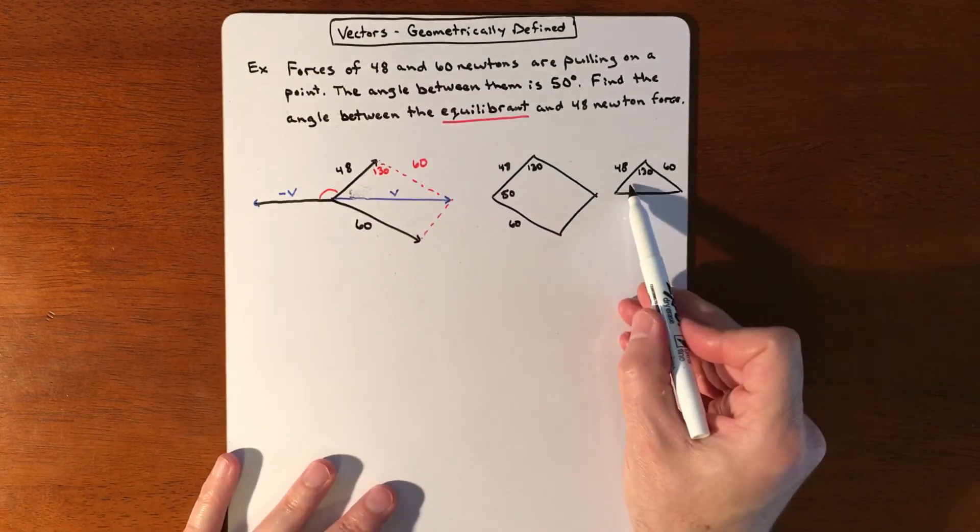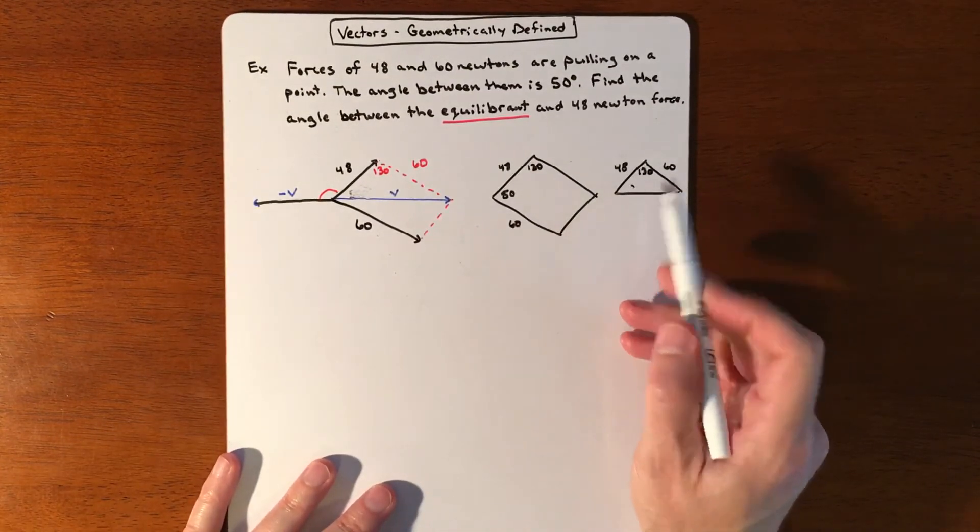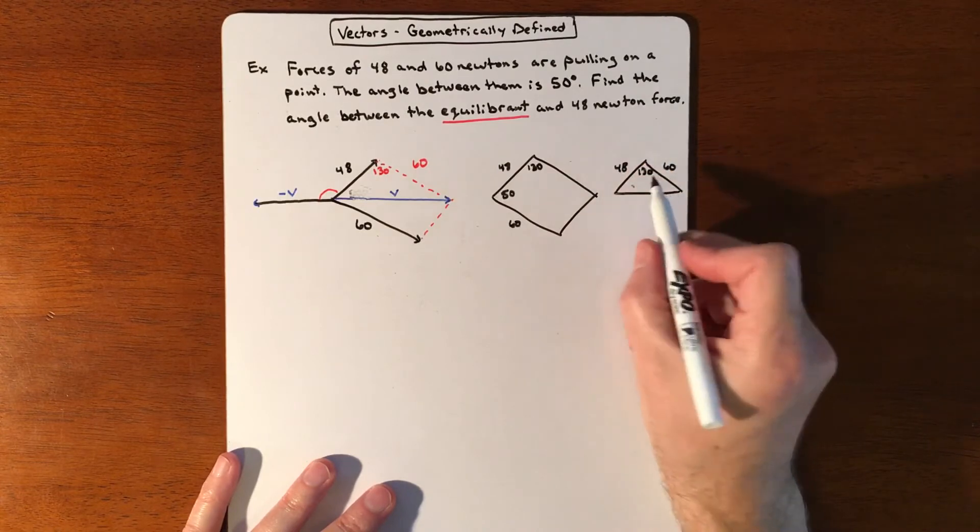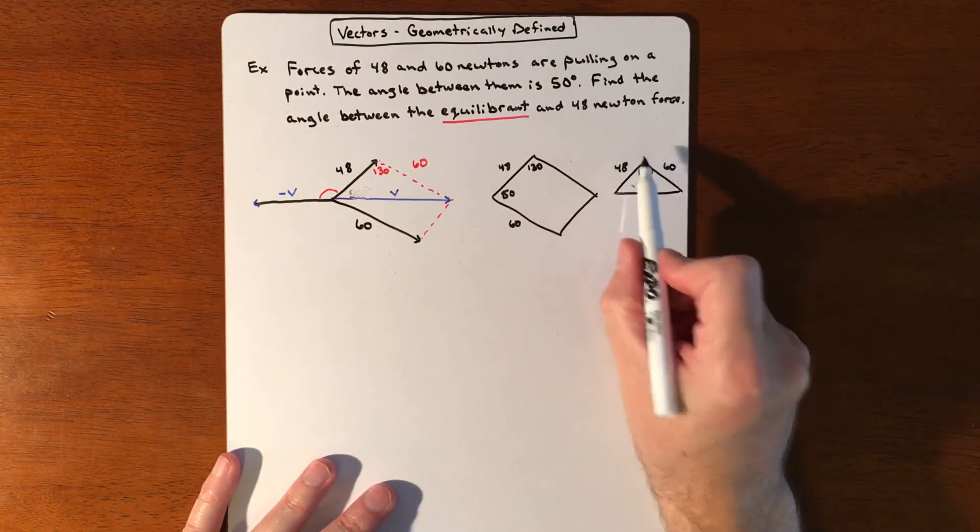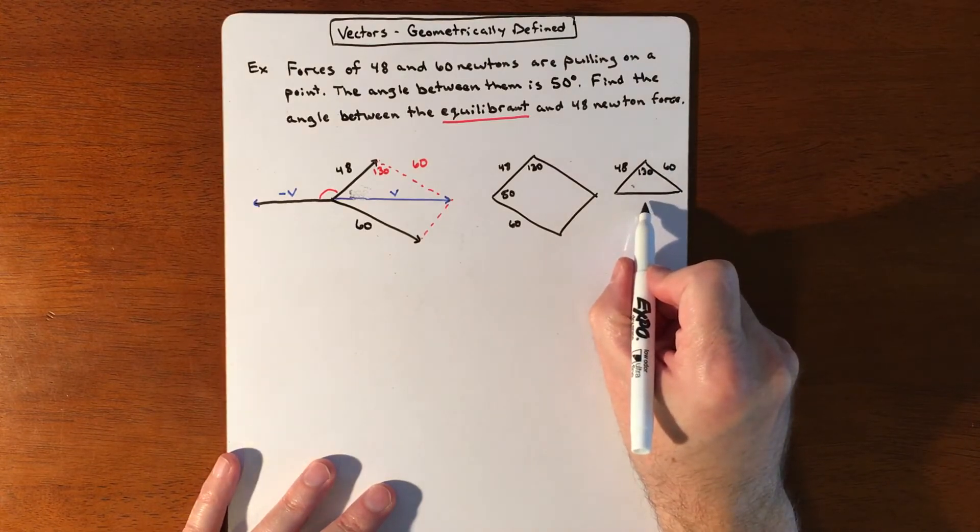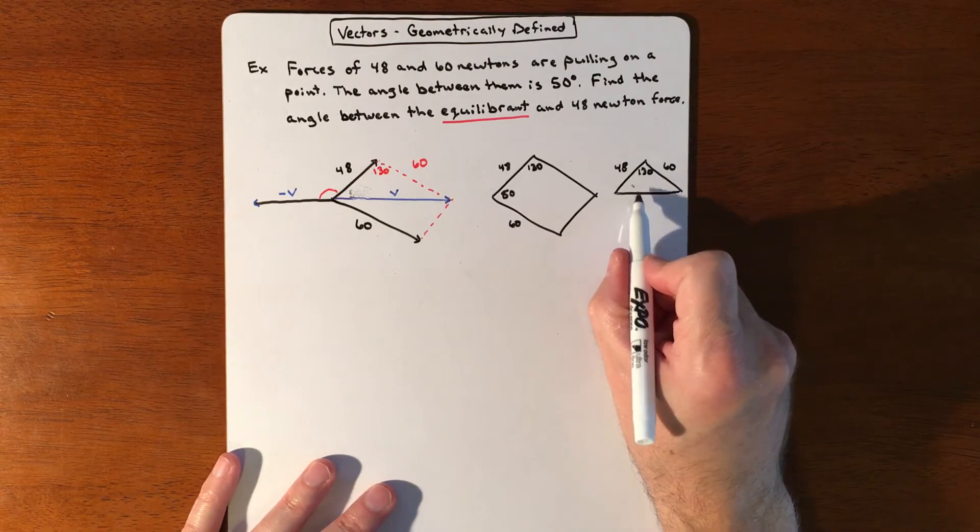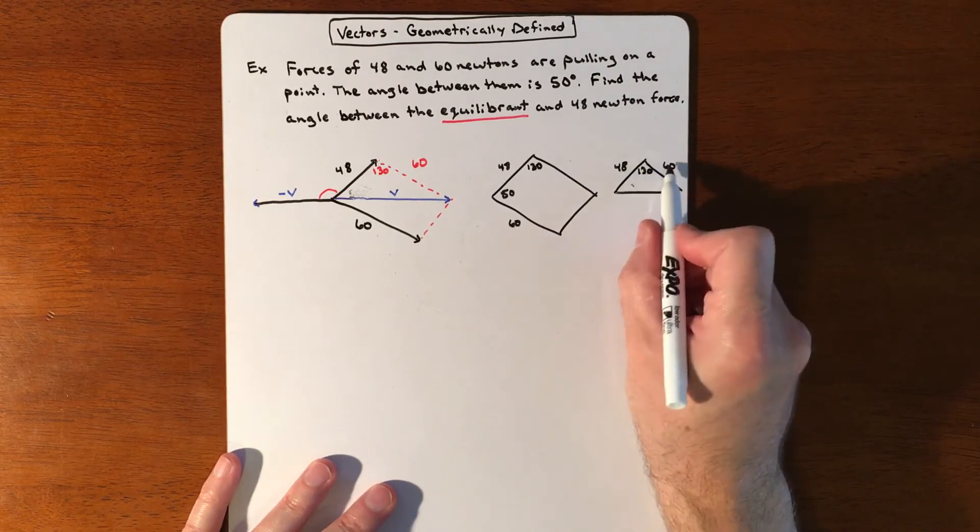Now what we need to figure out is this angle is kind of our goal. So I'm going to use law of cosines to figure out this side, and then once I have law of cosines to figure out that side, then I can use law of sines to figure out this angle with this side.